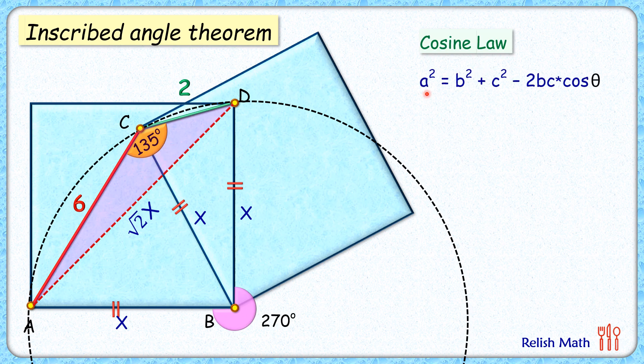As per the cosine law, we have a² = b² + c² - 2bc cos θ, where a, b, and c are the side lengths of the triangle and θ is the angle between b and c. So here, a is your DA length, that's root 2x; b and c are 6 and 2; and θ is 135 degrees.